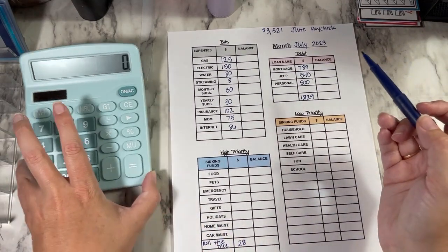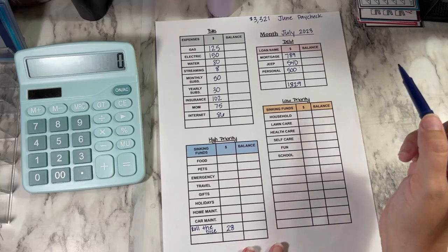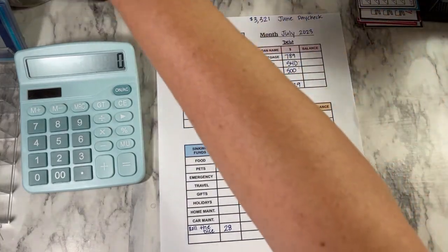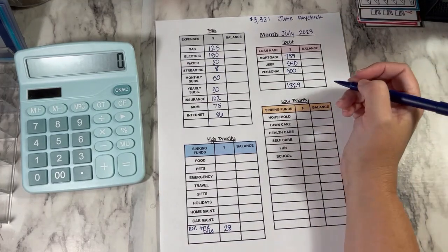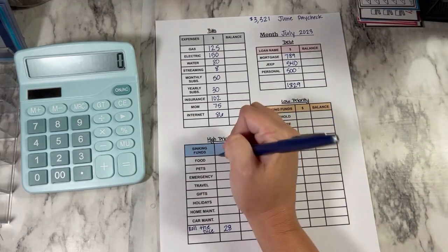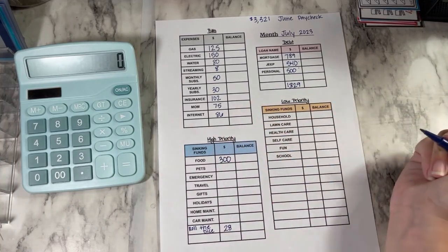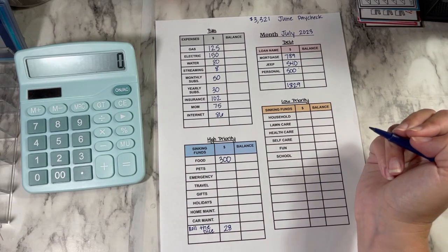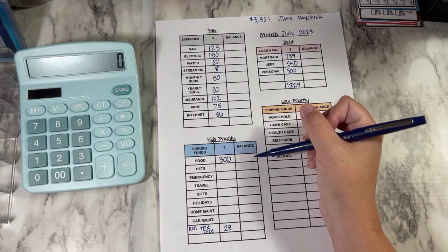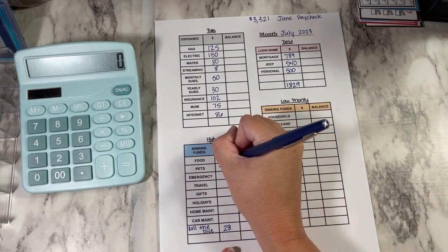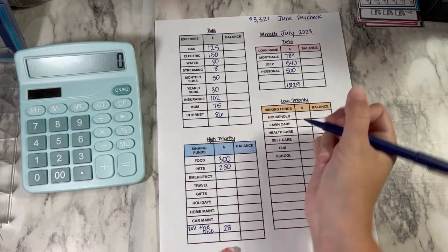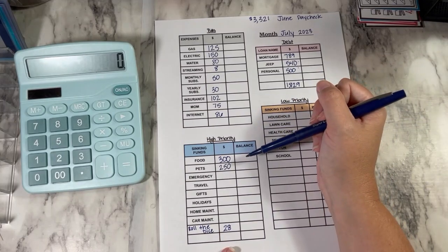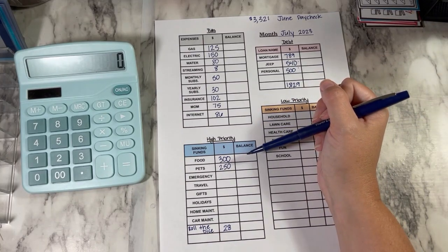And then there are a few things down here at the bottom that I budget for every month, but I have them down here instead of in bills. So for food, I'm doing $300 now to see if that will help me a little bit. I was doing $250 and I tended to go over every time. So we're going to adjust that a little bit. My pets, I do $250.